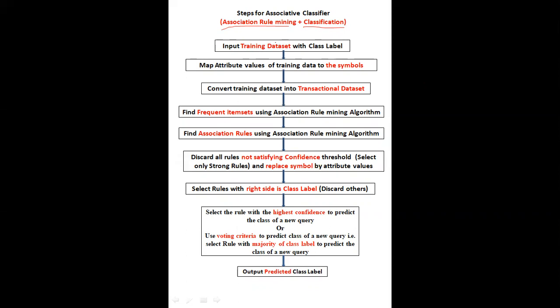Like your supervised learning technique, the input to this algorithm will be a training dataset with the class label. First we will discuss some of the algorithmic steps used to build the model, and that model you can use to predict the class of a new query. The additional thing here is what association rules. Like your other classification techniques, we build the model first from the given training dataset. Along with this, we find rules from this training dataset and these rules help you to predict the class of the new query. This is the basic idea behind the associative classifier.